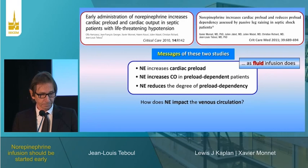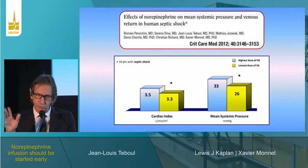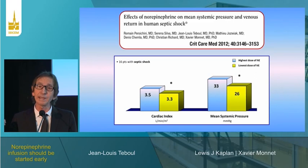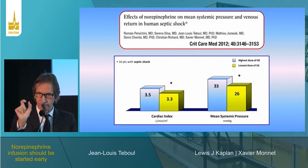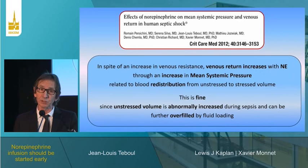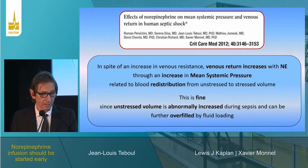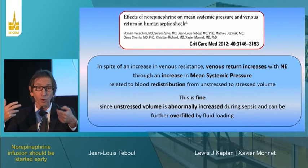The mechanism is probably blood redistribution from unstressed to stressed volume. In another study, the mean systemic pressure was estimated at two doses of norepinephrine. An increase in cardiac index was observed at the higher dose, along with an increase in mean systemic pressure, confirming blood redistribution from unstressed to stressed volume. In sepsis, unstressed volume is already abnormally increased, and giving fluid without norepinephrine can overfill this unstressed compartment.